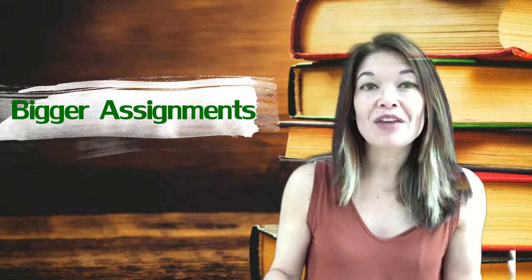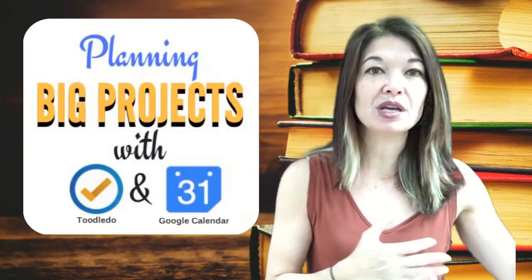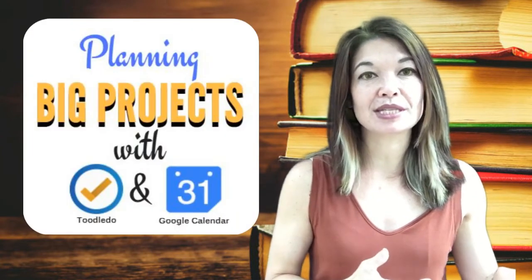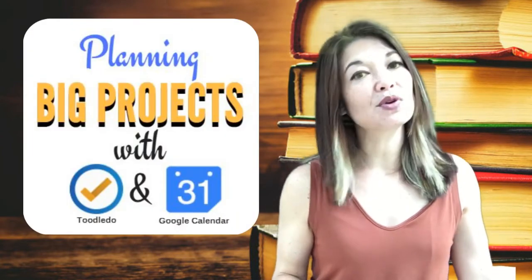Bigger assignments, like a 10-page term paper that's worth a good portion of your grade, these require a little bit different planning. I have a whole video on planning big projects and papers, but the most important thing to do is to put a reminder in Toodledo five to six weeks in advance of the paper due date to start breaking the project into smaller tasks.